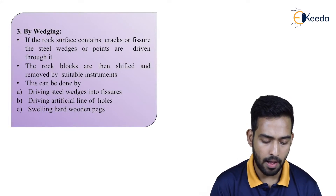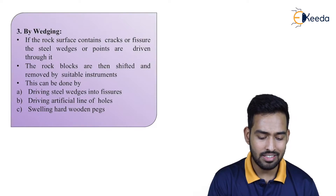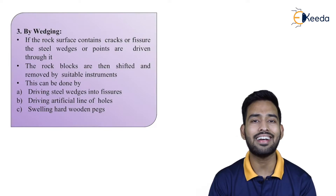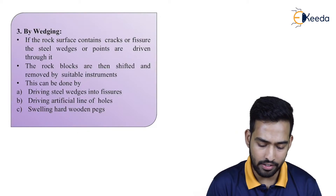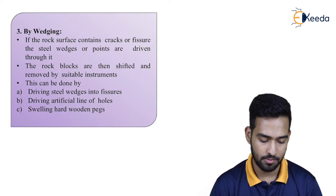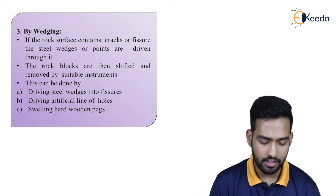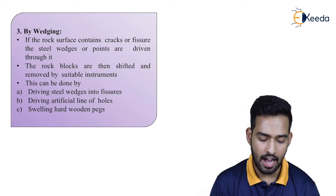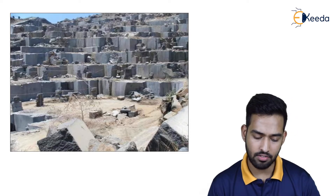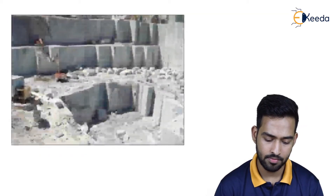The next hand tool method is wedging. If the rock surface contains cracks or fissures, steel edges or points are driven through them. The rock blocks are then shifted and removed by suitable instruments. This can be done by driving steel edges into fissures, driving artificial lines of holes, or using swelling hard wooden packs.